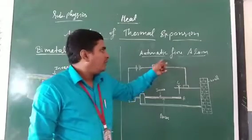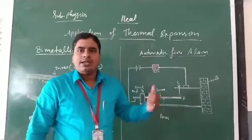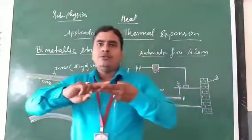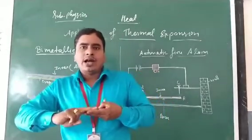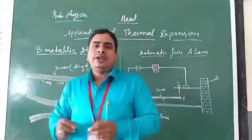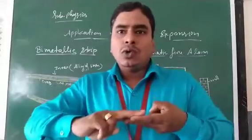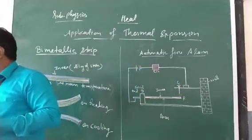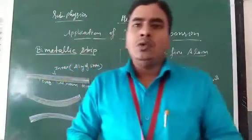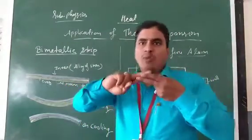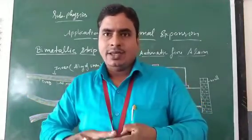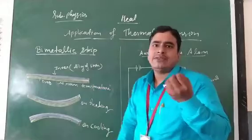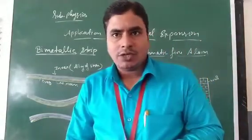We will also discuss how an automatic fire alarm works and on which principle it works. First, the bi-metallic strip: what is it? A bi-metallic strip is basically a combination of two metallic plates which are riveted over each other such that on cooling or heating they will not slip over each other. It is a combination of two metals — one may be brass and the other is an alloy of iron, a mixture of iron with other materials.